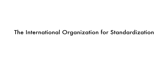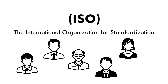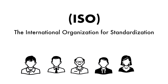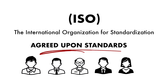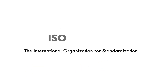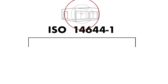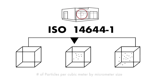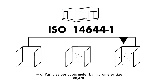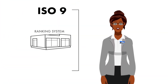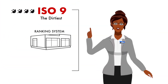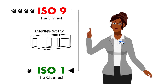The International Organization for Standardization, ISO, is a collaboration between experts in various fields to maintain agreed-upon standards. The ISO standards for clean rooms fall under ISO 14644-1, which ranks clean rooms according to the number of particles per cubic meter by micrometer size. The ranking system ranges from ISO 9, the dirtiest, to ISO 1, the cleanest.